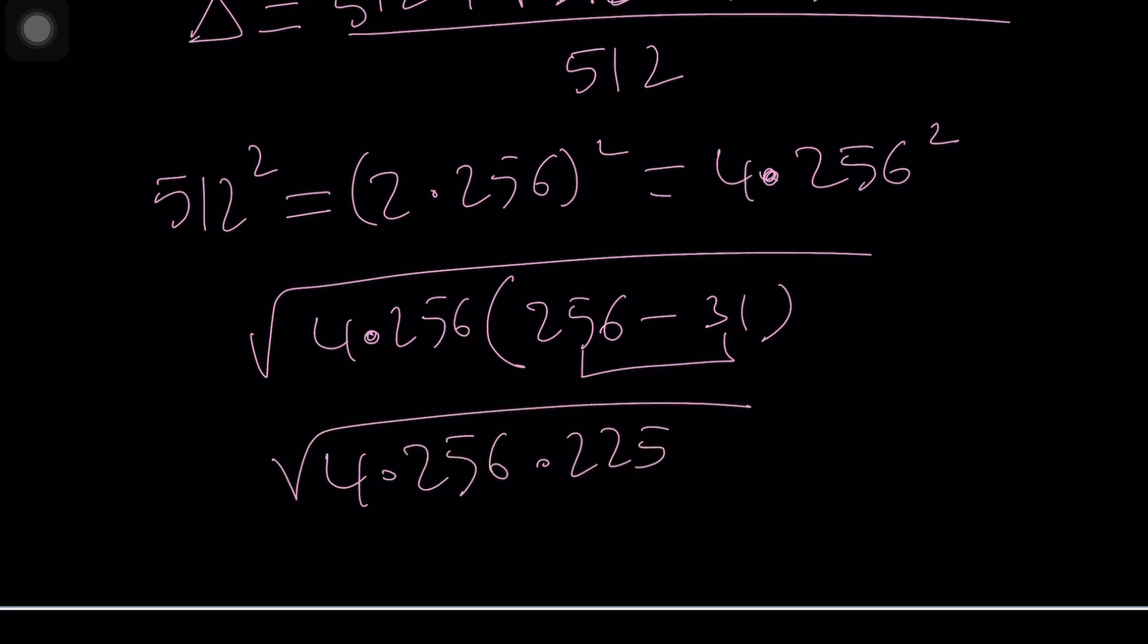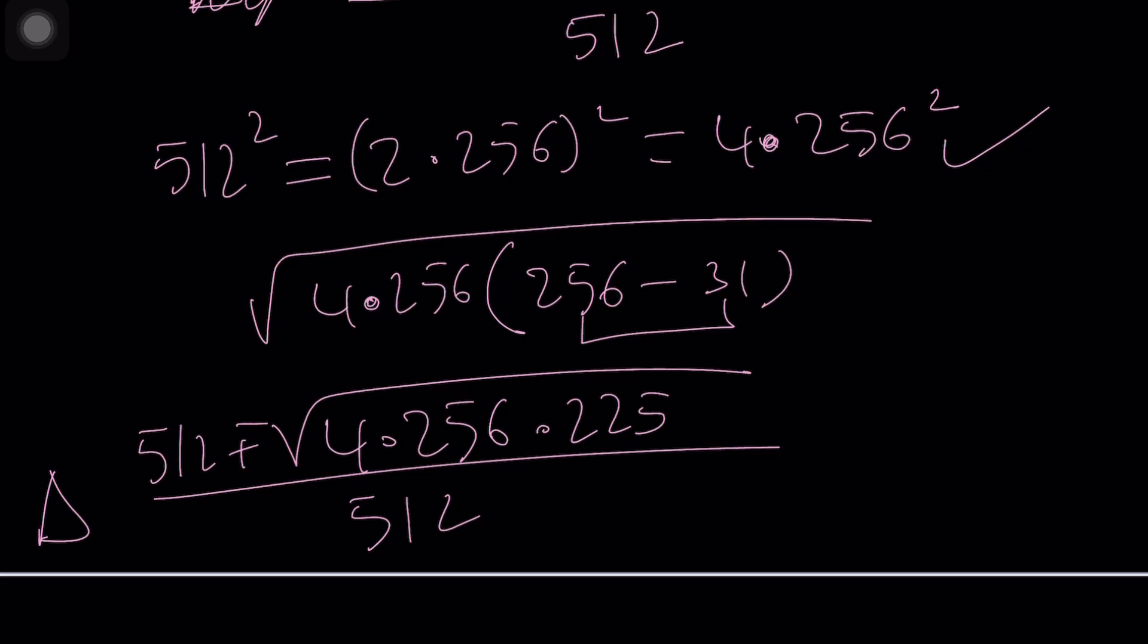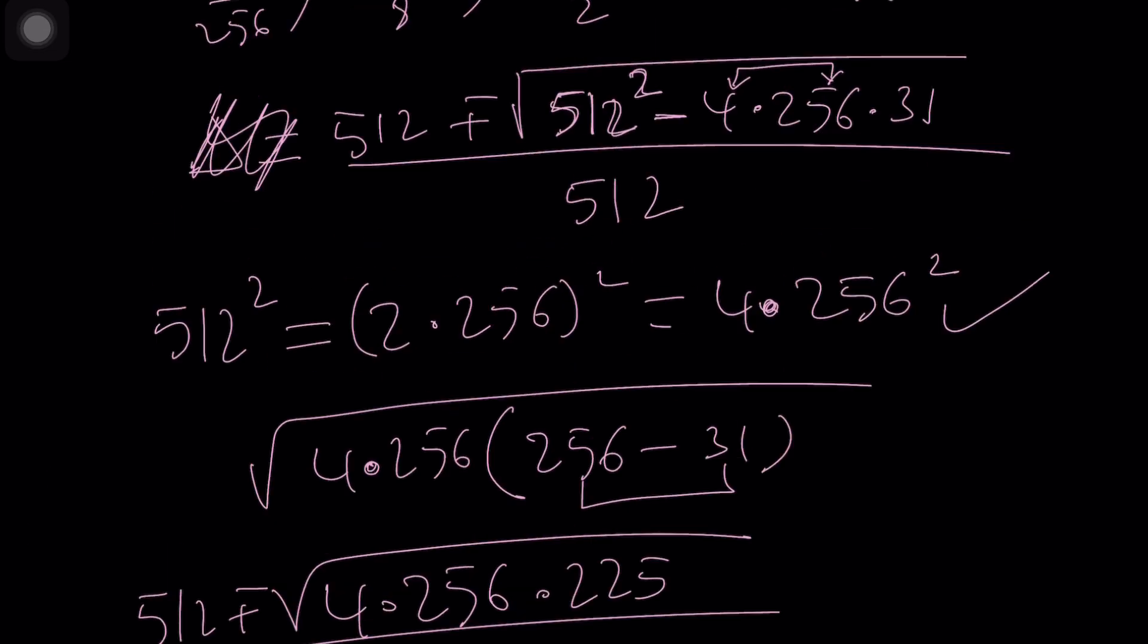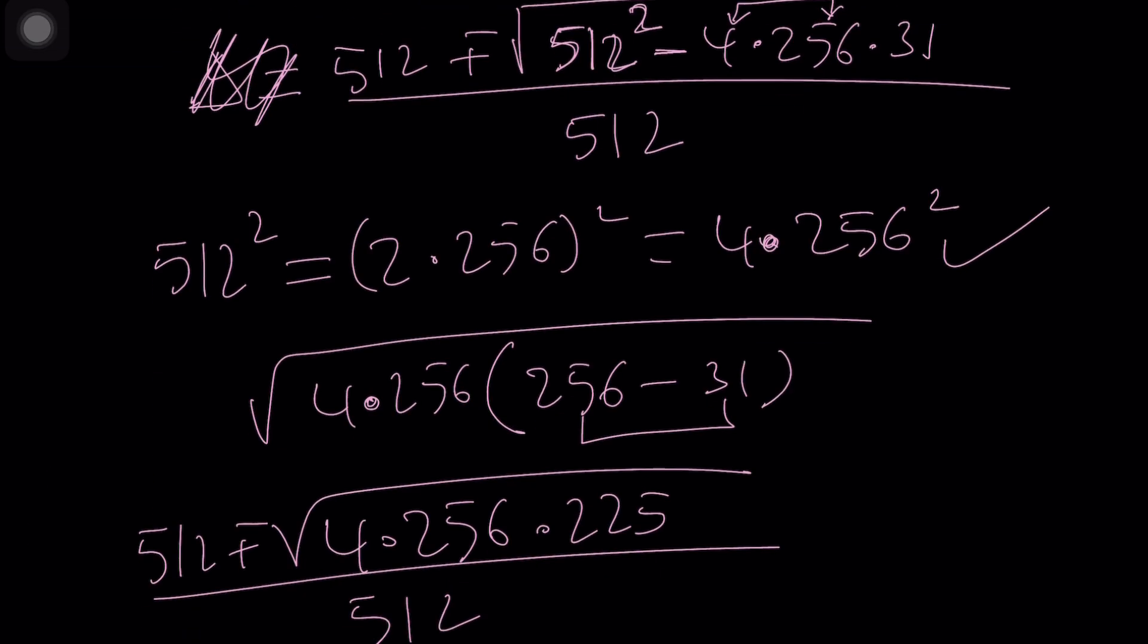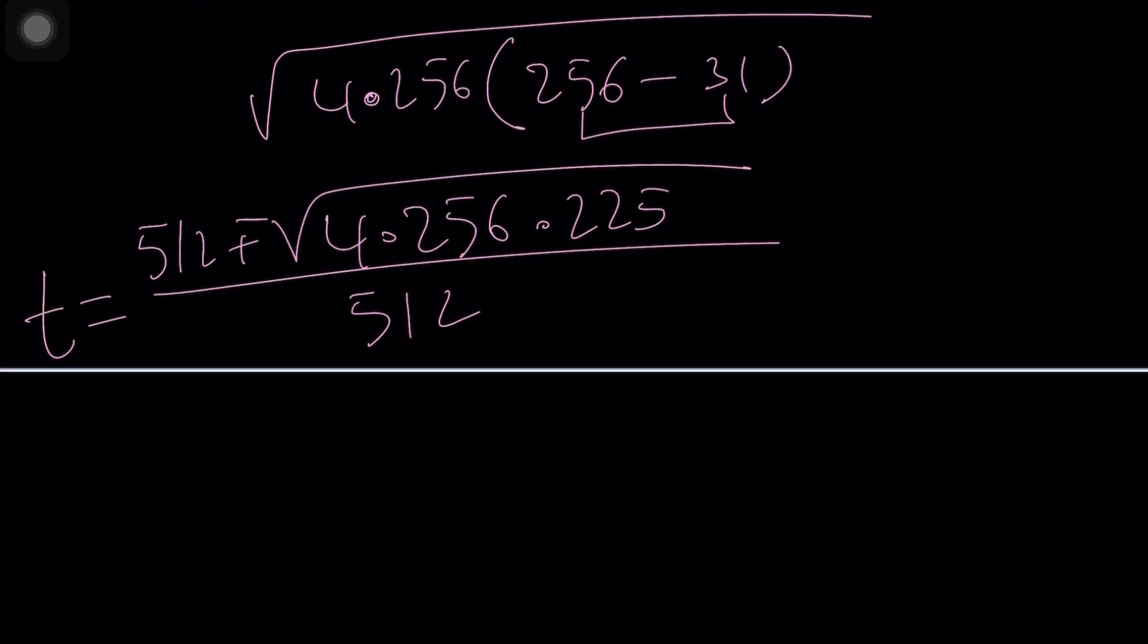So if you put together the quadratic formula you're going to get something like this. We can easily simplify this because these are all perfect squares and the square root of their product is going to be 2 times 16 times 15 which is 480.